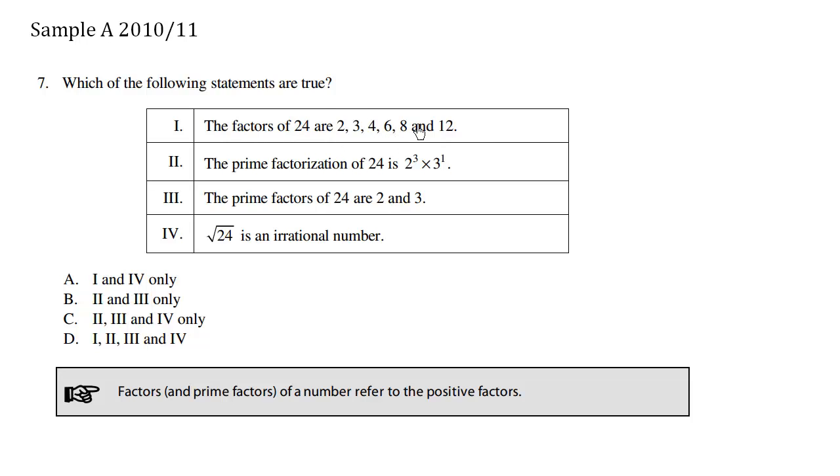6 also fits in. 8 as well as 12. Now this question is a bit tricky because even though that these are factors, so are the numbers 1 and 24, which is the number itself. So all numbers have factors 1 and itself. So this is kind of a trick question. So this here is wrong because we're missing the beginning and the end factors.